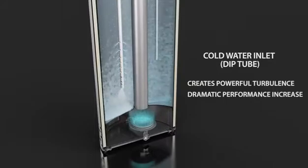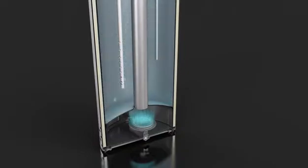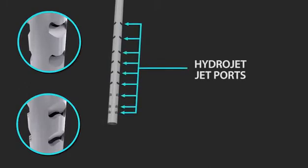At first glance, the HydroJet seems a little different from an ordinary dip tube, but let's take a closer look. You can see that the HydroJet has strategically placed openings, or jet ports designed into the length of the dip tube.